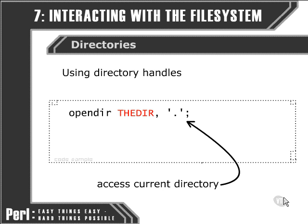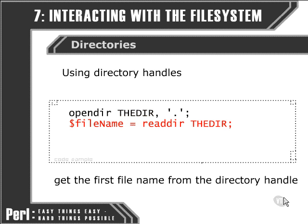Once we've got our directory handle open, we're able to use the readdir function to pull in the first entry of the directory, which gives us the file name. That allows us to access one file name within the directory, but if we're going to look through a directory, we'll probably want to get more than one file name from it.